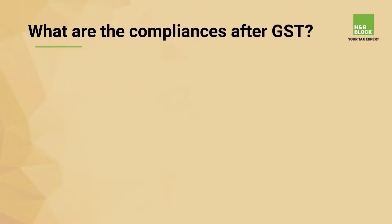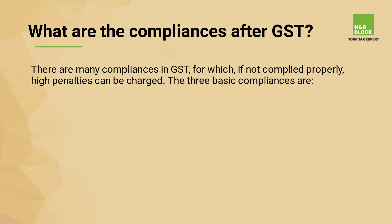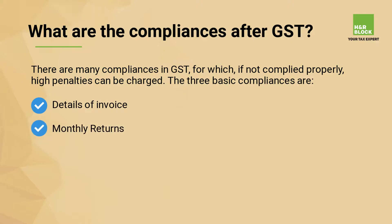What are the compliances in GST? There are many compliances in GST for which, if not complied with properly, high penalties can be charged. The three basic compliances are: a taxpayer having turnover up to Rs. 1.5 crore has to file a monthly return GSTR-3B and a quarterly return GSTR-1. There is also an annual return to be filed.